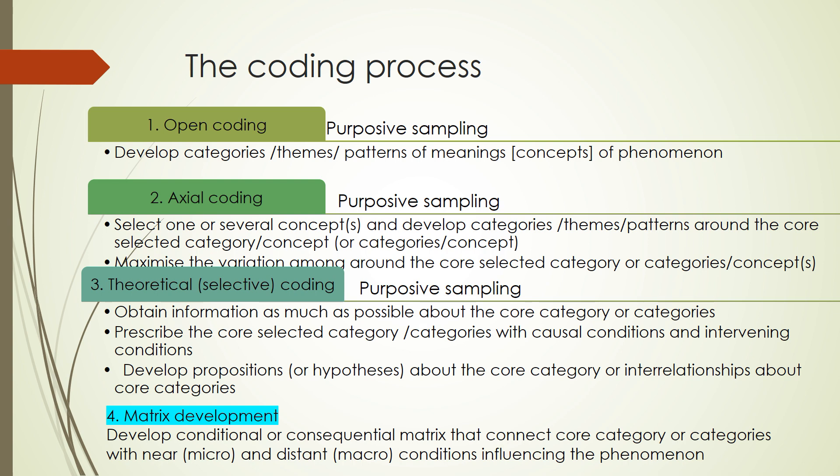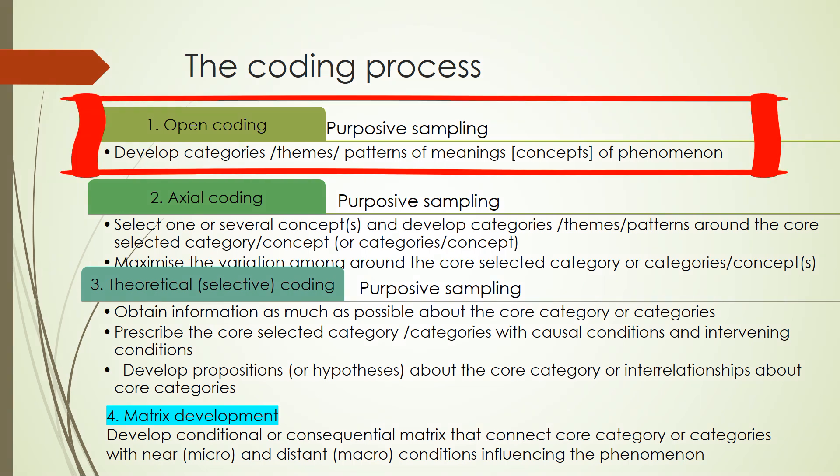When we start investigating a problem using Grounded Theory research methods, we want to identify what's emerging from the data. So we go and collect data on a phenomenon that doesn't have a theory to explain it. When we collect data, we conduct purposive sampling — we purposefully identify observations to maximize and focus on the data that we are keen on analyzing to understand the phenomenon.